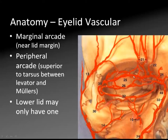In your upper lid, number 25 would be the superior peripheral arcade, and 26 would be the marginal arcade. The lower lid may only have one of these, which is depicted by 32 here.